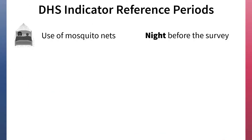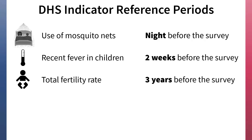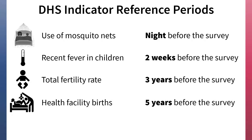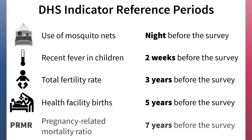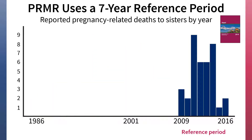Because pregnancy-related mortality is statistically rare, its associated reference period is specified to be longer than most other indicators in DHS surveys. The PRMR is typically reported for the seven-year period prior to the survey in order to increase the number of deaths in the numerator of the ratio. It's important to note that although women are asked about the survival status of all their siblings, the PRMR calculation is limited to the deaths within the reference period, most frequently the seven-year period before the survey.